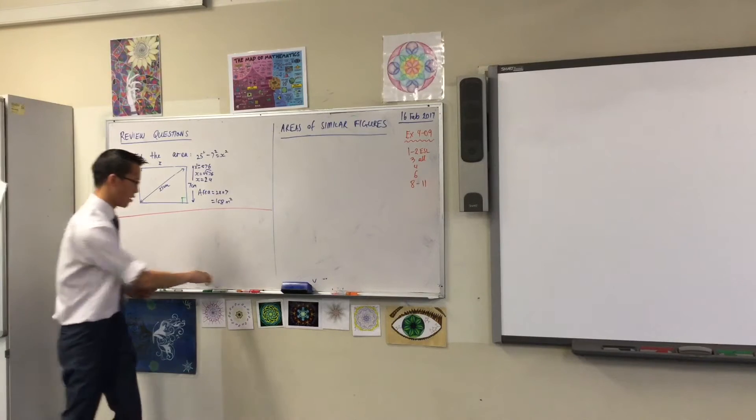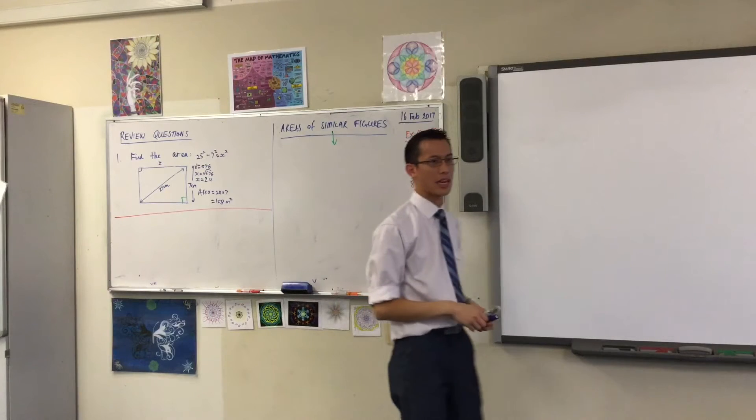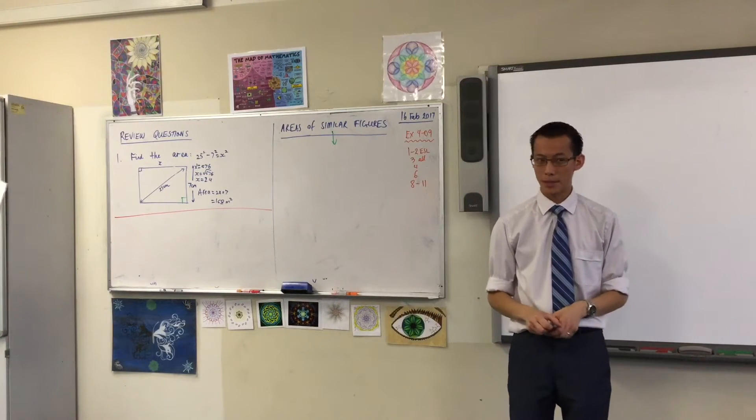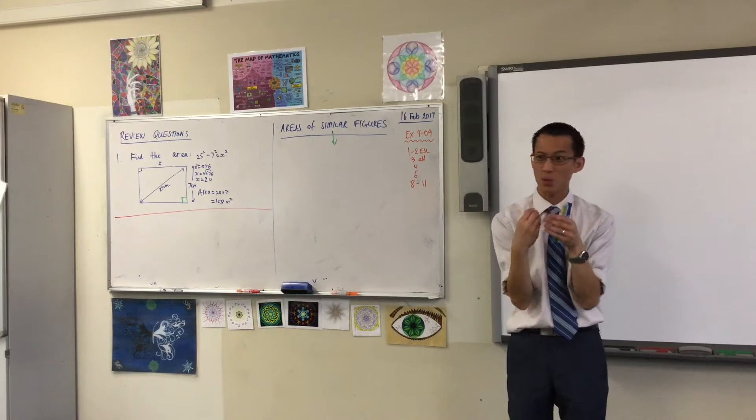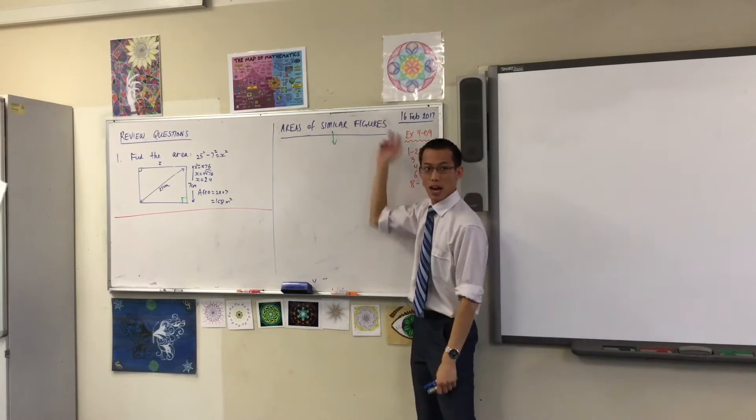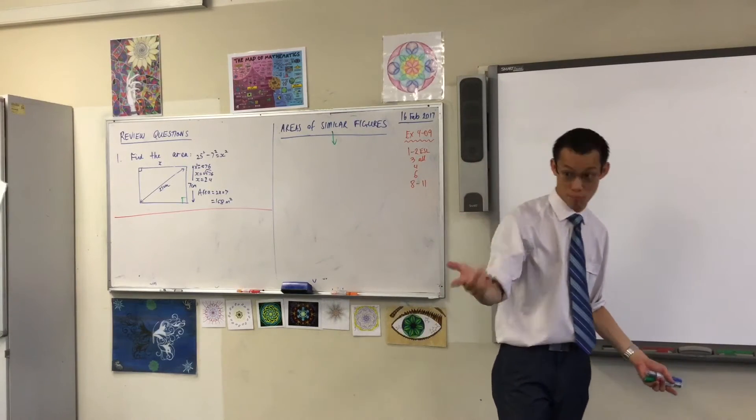To start off with, we need to remember what specifically are we meaning when we say two shapes are similar. Does anyone want to venture a nice, succinct one sentence definition? Similar figures are? Any takers? Brian, what do you think?